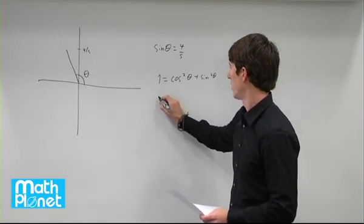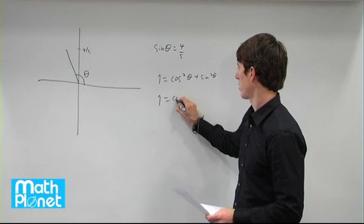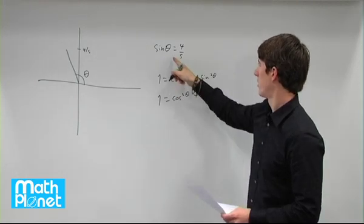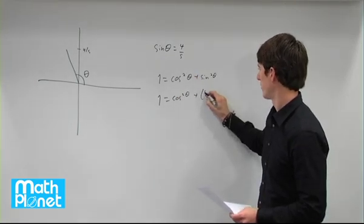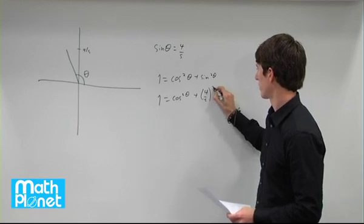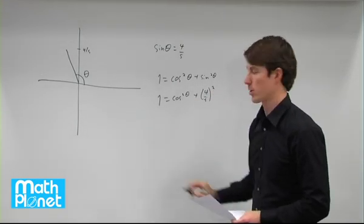So we have 1 equals cosine squared theta plus this squared, so 4 over 5 squared. Great. So now we can just solve for cosine.